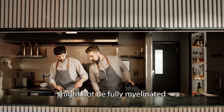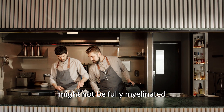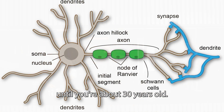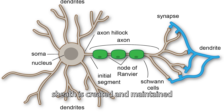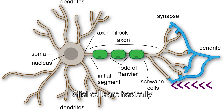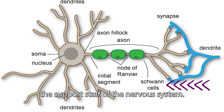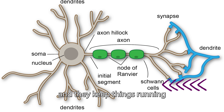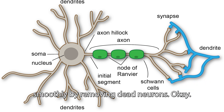Fun fact: your neurons in your brain might not be fully myelinated until you're about 30 years old. This myelin sheath is created and maintained by glial cells. Glial cells are basically the support staff of the nervous system — they provide physical support for neurons and keep things running smoothly by removing dead neurons.